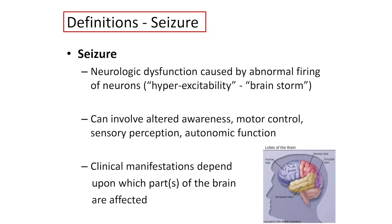What is a seizure? We can define it as an episode of neurologic dysfunction caused by abnormal brain firing of neurons. Some people call it a brainstorm. It essentially is hyperexcitability — when the brain becomes overexcited. This can involve altered awareness, altered motor control, losing control of your arms and legs, funny feelings in your fingers or toes, or even changes in autonomic function like blood pressure and breathing.